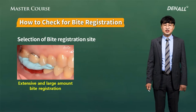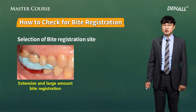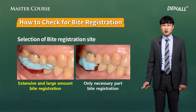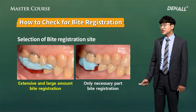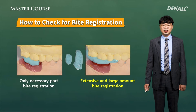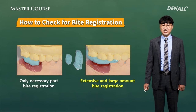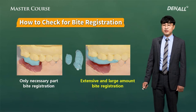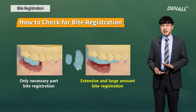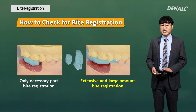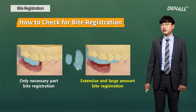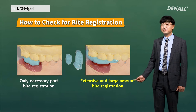For bite registration, going wide where there are natural teeth is not ideal. It's better for lab work to only register the necessary part. With natural teeth, you just let the patient bite to natural teeth, and that is better for mounting. Even if the silicone material is very thin, when the lower and upper teeth meet, it could interfere with the mounting.